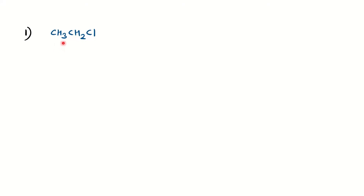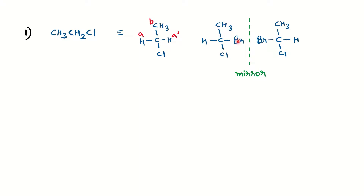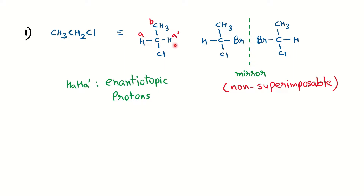Let's solve some problems. For ethyl chloride, there are two signals in NMR — one for CH₂ and one for CH₃. For the two protons on CH₂, labeled HA and HA', substituting one H with Br generates enantiomers (non-superimposable mirror images). Therefore HA and HA' are enantiotopic protons. Since NMR cannot distinguish enantiotopic protons, they give one signal — confirming ethyl chloride shows two total signals in proton NMR.